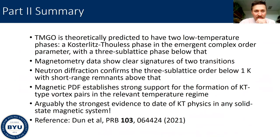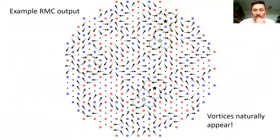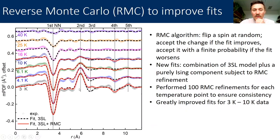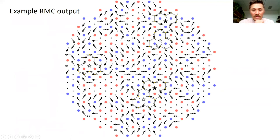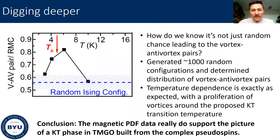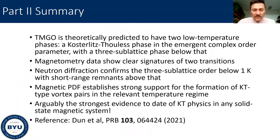So that's the first story of TMGO. To summarize, looking at the short-range spin correlations in real space allowed us to identify correlations at specific distances that could not be explained by the three-sublattice model, but instead can be well described by a model consistent with the formation of vortex-antivortex pairs. It was looking at the short-range spin correlations in real space that revealed the secrets of TMGO.